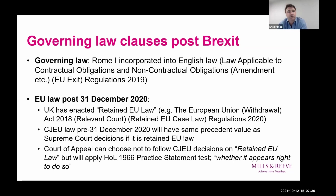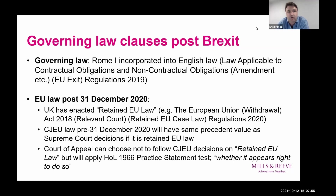Contract parties will therefore need to consider what impact EU law, as interpreted by the UK courts, has on their contracts — particularly those drafted to rely upon certain EU laws. One example where EU law will still be relevant is commercial agency agreements, where EU-sourced rules provide certain protections for commercial agents and rules about when you can terminate a commercial agency. There is now increased scope for divergence as to how the UK and EU courts will interpret those rules.